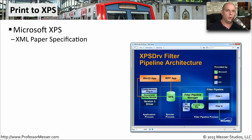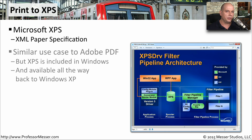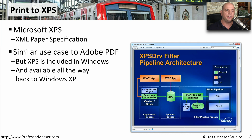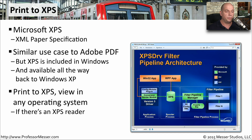Another very similar format to PDF is the Microsoft XPS format, which stands for XML Paper Specification. It's almost a very similar use case to the PDF format from Adobe, but it is very specific to Windows. There is an XPS driver and reader that goes all the way back to Windows XP. To use this, you would print your document into XPS format and then use a reader available in practically any operating system to view it.